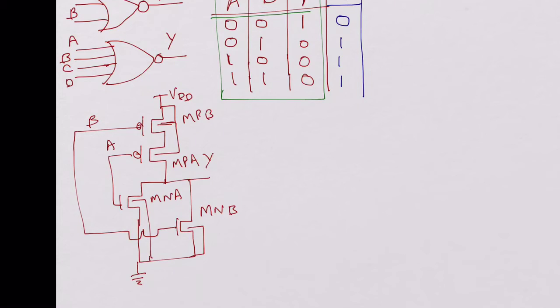Now let's look at how it operates. Let's look at the first condition when both the inputs are at ground. When A and B both are at ground, both the P channel devices MPB and MPA are both on.